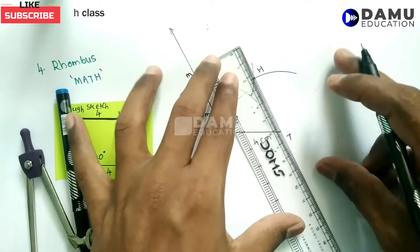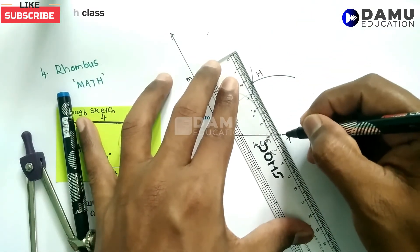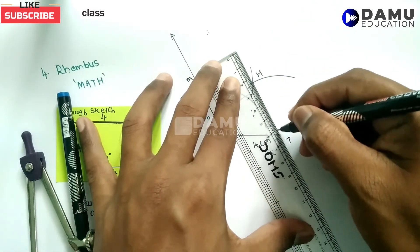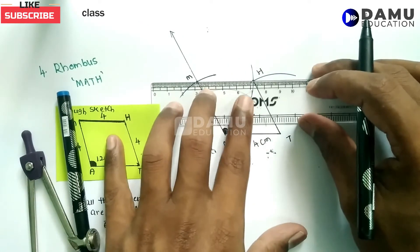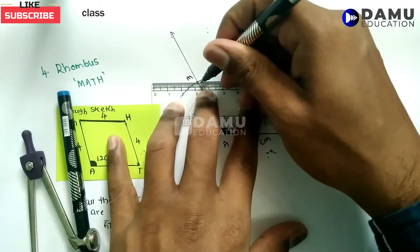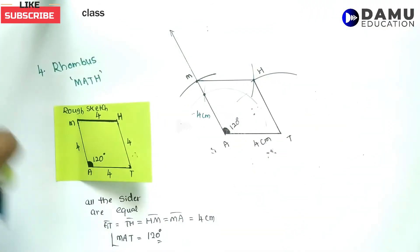Now join H and T, then join H and M. We have constructed the rhombus.